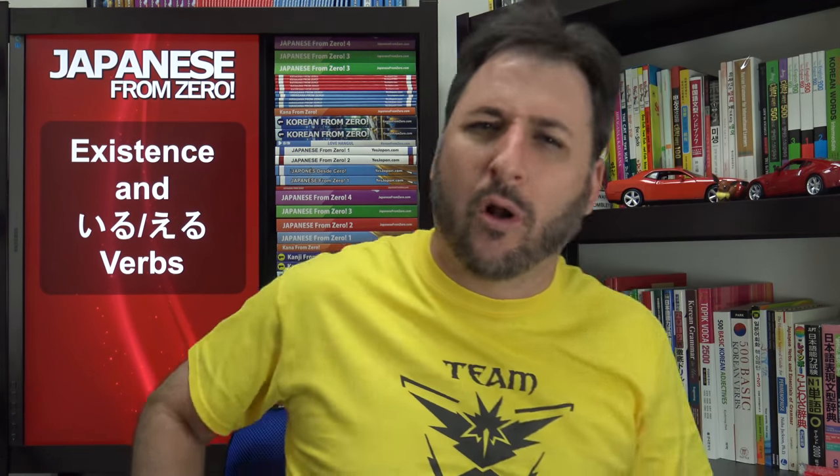Today we're going to talk about something that is extremely important — two very important things. We're going to talk about existence verbs and iru-eru verbs. We're also going to talk in the next few videos about the way verbs work in Japanese. We did a lot of this at the end of Course 1, but I want to drive some things home.